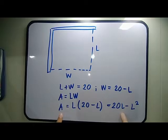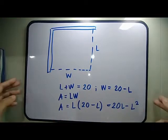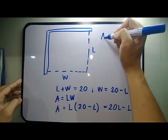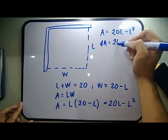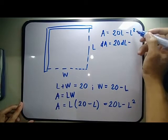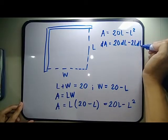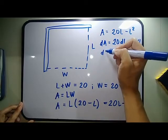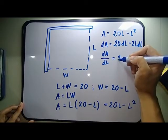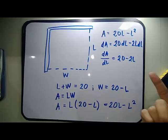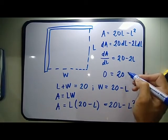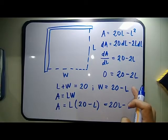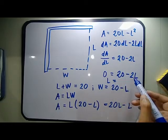We differentiate area since it is the required parameter for maximum area. Differentiating A = 20L − L² with respect to L gives dA/dL = 20 − 2L. To maximize or minimize, equate the derivative to zero: 0 = 20 − 2L. Therefore, L equals 20 divided by 2, so L equals 10.